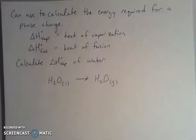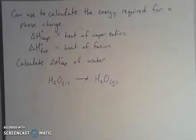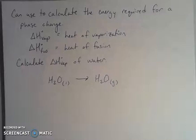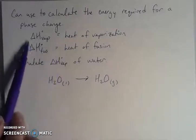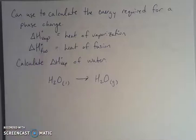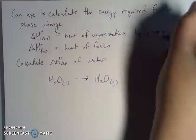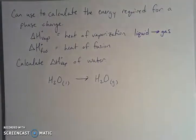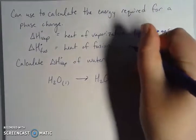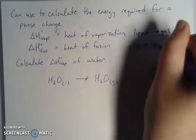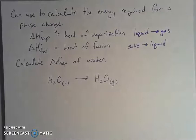Another application is looking at phase changes — let's take water, for example. There are some new subscripts here. Delta H vap is the heat of vaporization — going from a liquid to a gas — representing the energy you have to put in to make that transition. Delta H fus, the enthalpy of fusion at standard conditions, is going from a solid to a liquid, because fusion is another term for melting. This is how much energy you have to put in to go from a solid to a liquid phase.